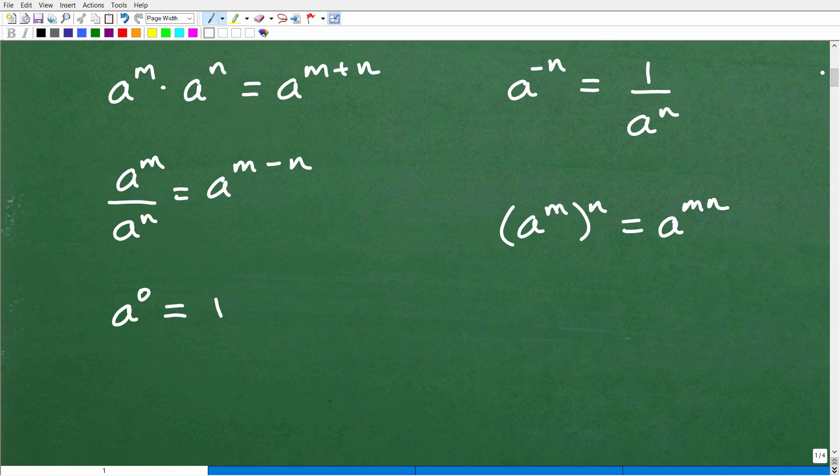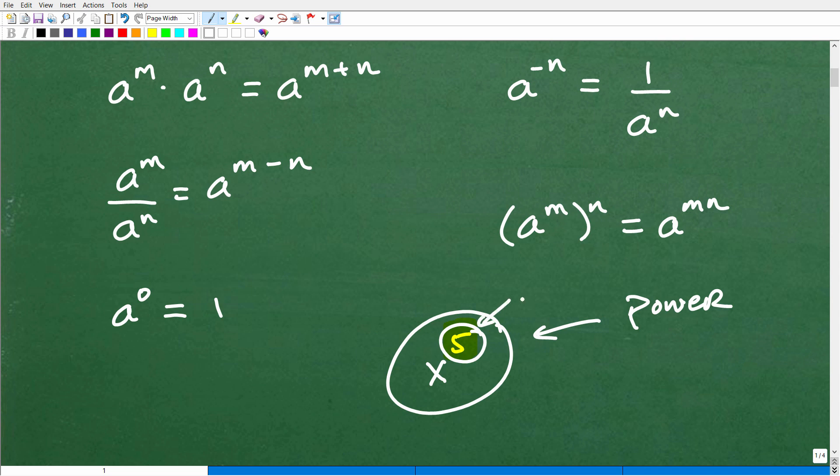So when you're dealing with the powers in algebra, for example, let's just write this here. X to the fifth power. This whole thing is considered a power. So let's just make sure we have the right terminology here. And this little number up here, this number is called the exponent, and then this bigger number down here on the bottom is the base. So we have a base, we have an exponent, but the whole entire thing is a power.